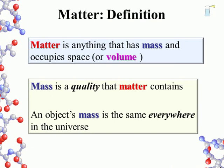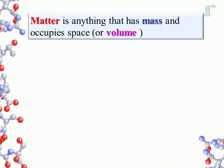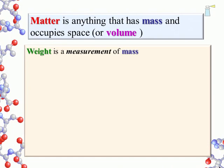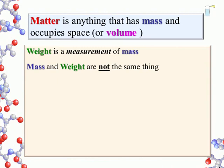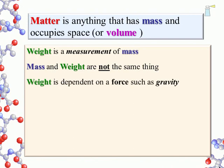When considering the mass component of matter, we find ourselves at weight. Weight is a measurement of mass. Weight and mass are not the same thing. Sometimes we will treat them as if they are the same — that is, use weight for mass. But they are different because weight is dependent on a force, such as gravity.